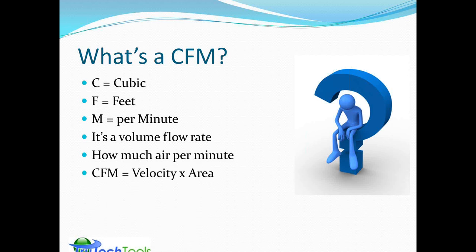CFM is derived from a velocity measurement combined with an area measurement. Many anemometers work this way, though devices like capture hoods can report CFM directly. Most typically you use an air velocity meter or anemometer, and you can think of CFM as cubic boxes of air per minute flowing through the system — understanding you're moving masses of air in different volumes.